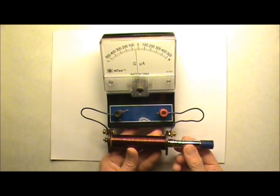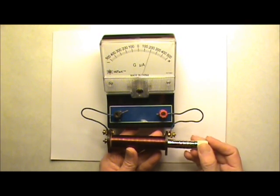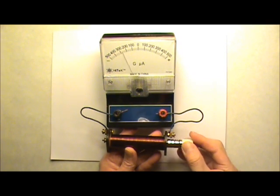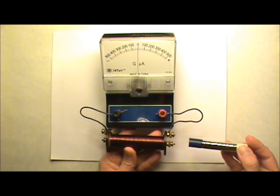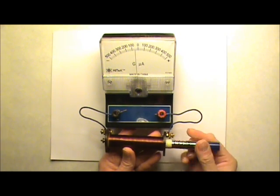What if I flip the magnet over? When I push it in, now the needle goes to the right. When I pull it out, it goes to the left. Opposite to what happens when it was like this.